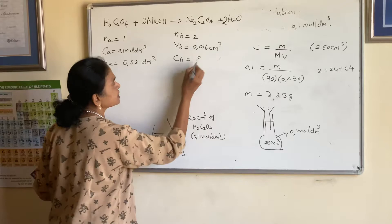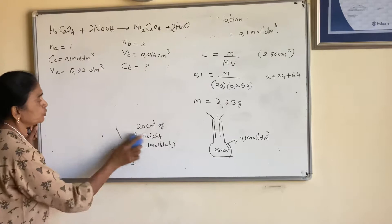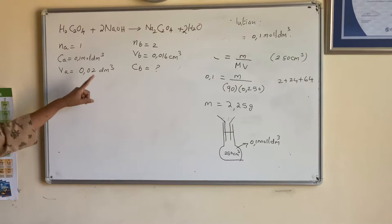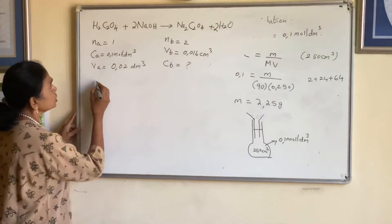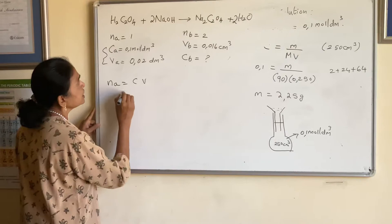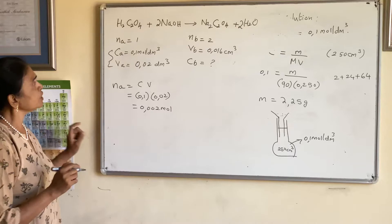Assume the average from three readings is 0.016 dm³. What we need to find is the concentration of the base. Before the endpoint, the acid is in excess; after the endpoint, the base can be in excess. Now calculate the number of moles of acid: n = C × V = 0.1 × 0.02, which gives 0.002 moles.